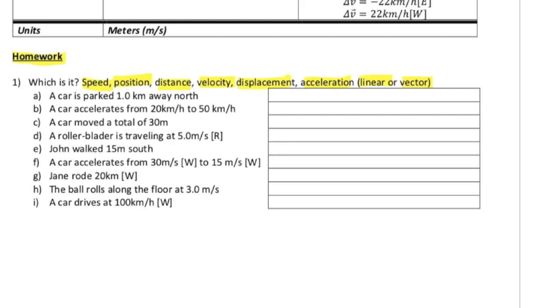Linear means that there is no direction associated. Vector, of course, means that there is a direction associated with it. All right, good stuff. The next note that we're going to be discussing, we'll be talking about position versus time graphs and velocity versus time graphs and how to work with those.